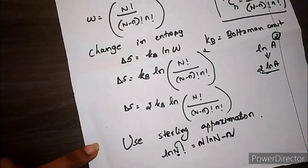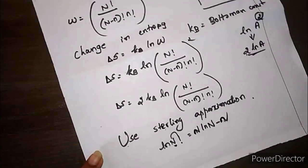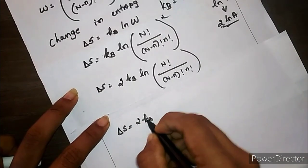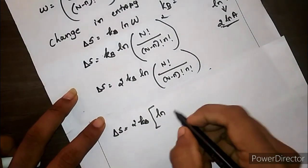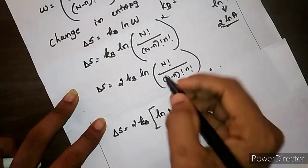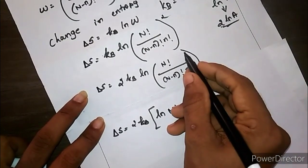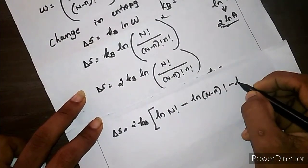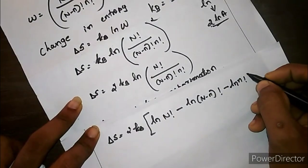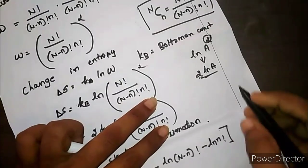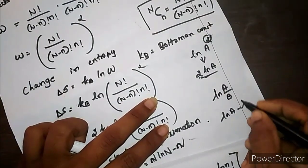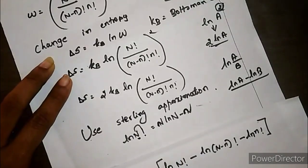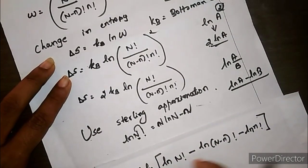Substituting equations 2, 3, and 4 into equation 1: ΔS = 2kB · [ln(N!) − ln((N−n)!) − ln(n!)]. Using ln(A/B) = ln(A) − ln(B), I open the bracket and write: ΔS = 2kB · [(N·ln(N) − N) − ((N−n)·ln(N−n) − (N−n)) − (n·ln(n) − n)].